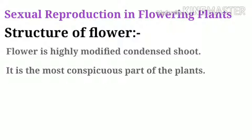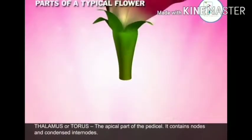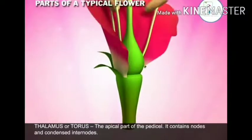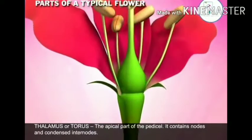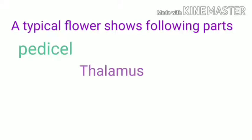The flower is the most conspicuous part of the plant — the most easily noticeable part. A typical 3D flower, as you can see in the diagram, shows three parts: pedicel, thalamus, and floral whorls.